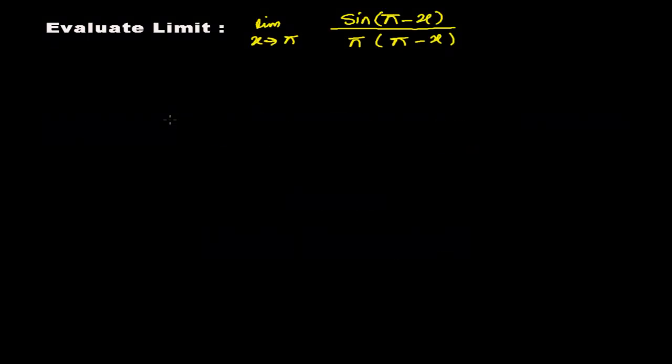Hello friends, welcome once again. Here we're going to do another problem: limit x tends to π, sine(π-x) divided by π(π-x). Initially we're getting some variable tends to zero, or the angle tends to zero, but here we're getting some constant value π, which is a constant value.